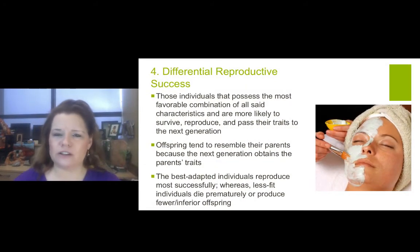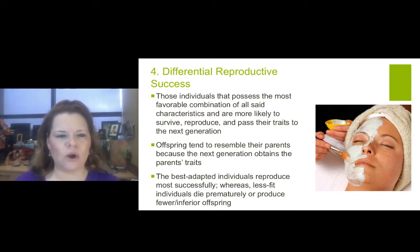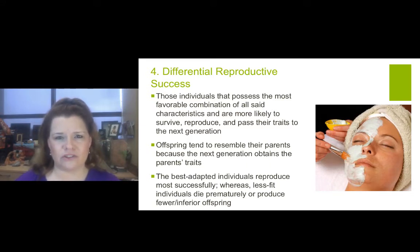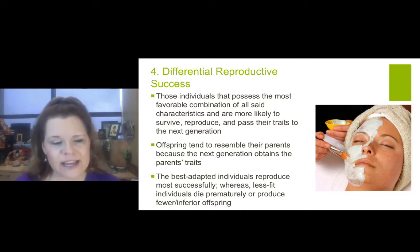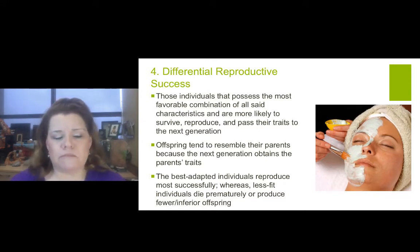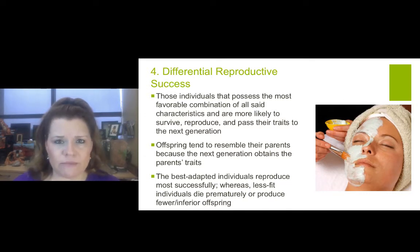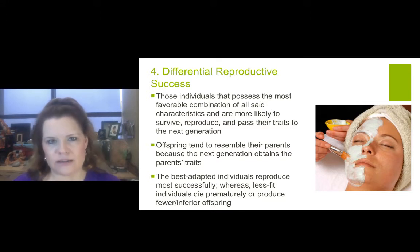Four: differential reproductive success. Those individuals that possess the most favorable combination of all characteristics for reproduction and are more likely to survive to reproduce and pass their traits on to the next generation will have a higher success in reproduction. Offspring tend to resemble their parents because the next generation obtains their genetic footprint from their parents' traits. The best adapted individuals reproduce most successfully, whereas less fit individuals die prematurely or reproduce fewer or inferior offspring. There are certain traits in nature that attract mates, and those can be sensed by organisms in the wild.